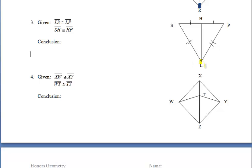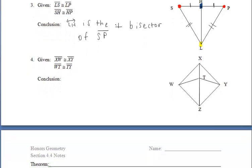For example 3, we know that we have point L that is equidistant from points S and P, and point H that is also equidistant from those two points S and P. So that means those two points, L and H, determine the perpendicular bisector of segment SP.